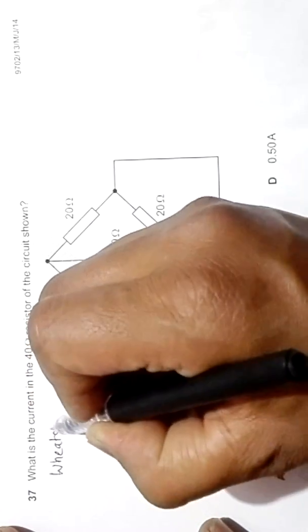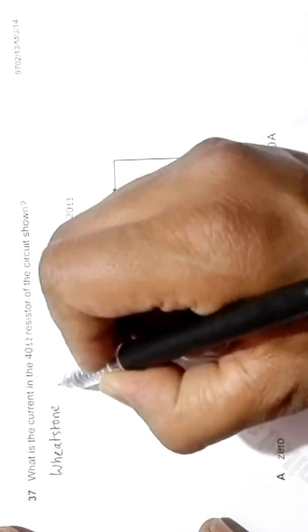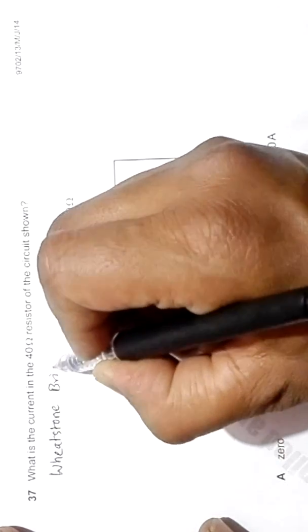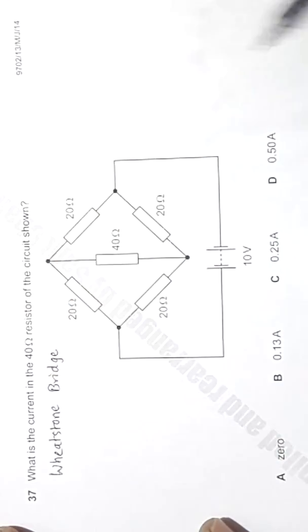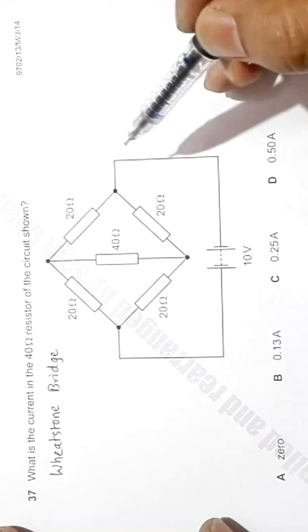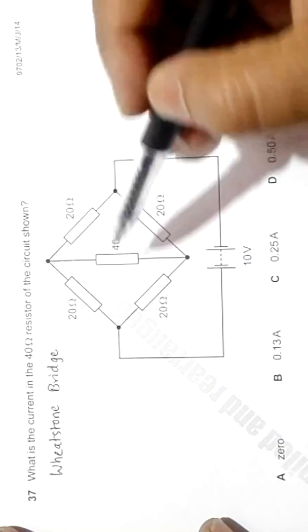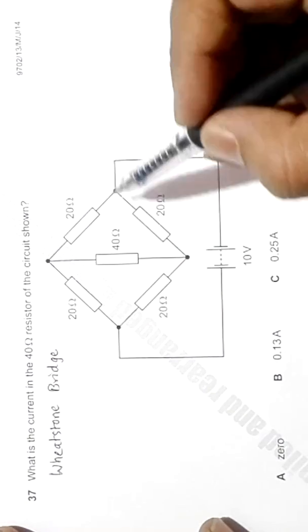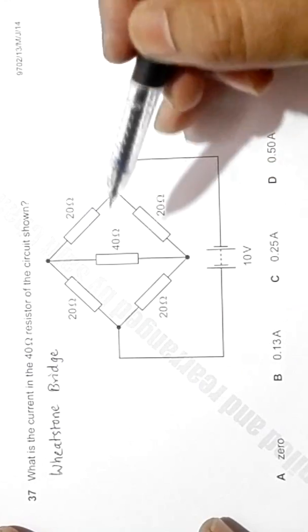Such a circuit as shown here is called a Wheatstone bridge circuit. It's a complex circuit in itself because we have a power source across these two junctions.